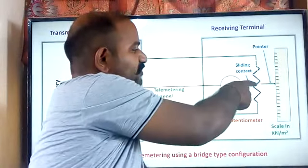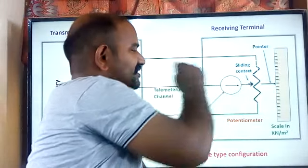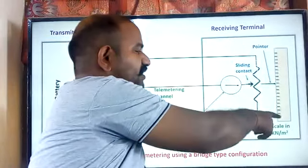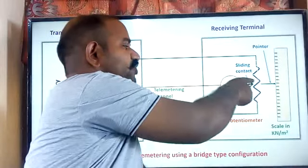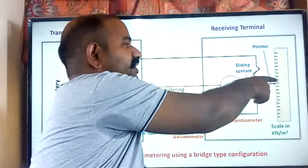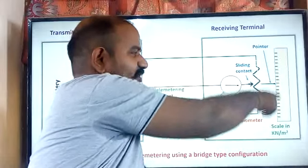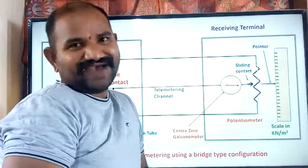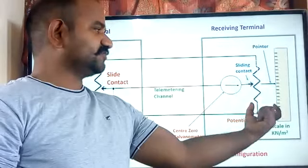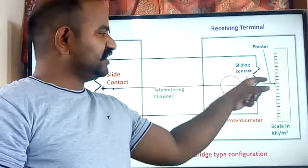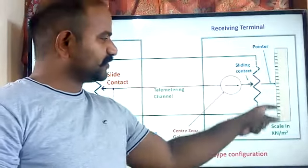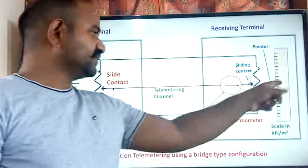When this terminal — the sliding contact — changes its position, it is connected to a needle that points information on the pressure scale. Whenever there is a change, this needle changes its position and whatever value you read from this scale becomes your pressure value — the pressure sensed by the Bourdon tube. These two are synchronized: whenever there is a change, the pointer on the scale shows how much pressure is experienced by the Bourdon tube.